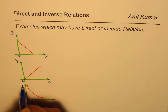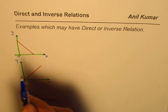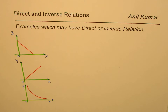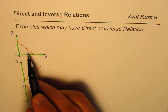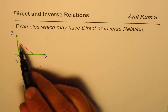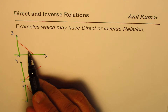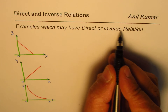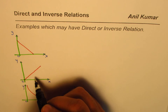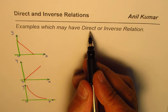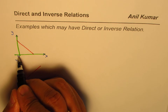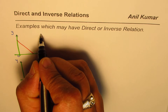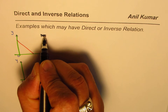Think about which one is direct, which one is inverse, or are they all neither. If you look at the first graph, it is a straight line but it does not go through the origin. Since it does not go through the origin it cannot be direct, and since it is a straight line it cannot be inverse either. So this one is neither.